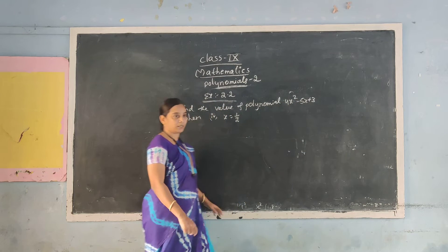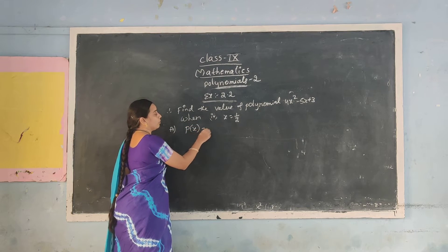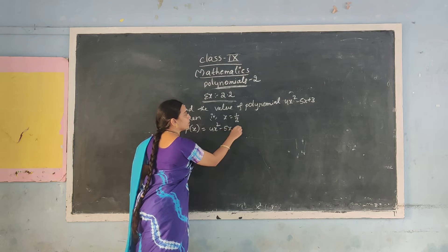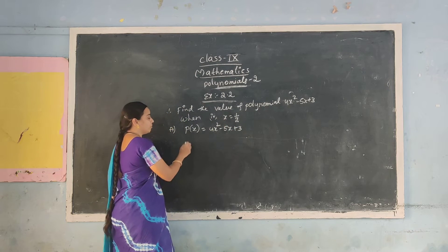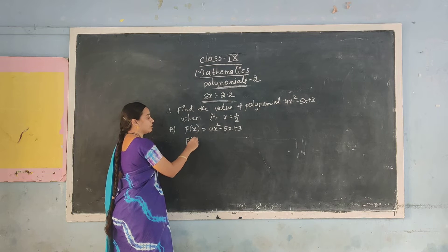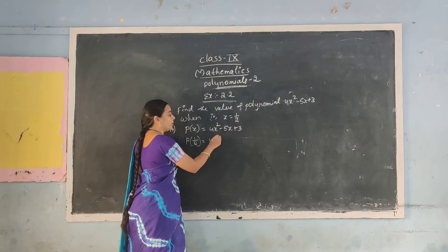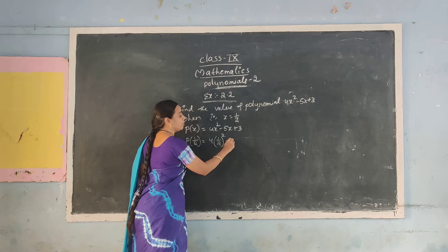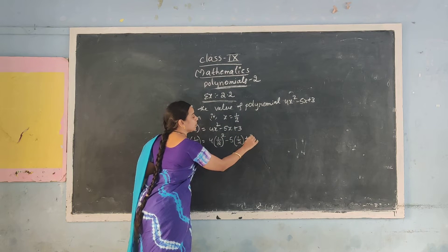First of all, p of x is denoted by the polynomial, that is 4x squared minus 5x plus 3. Here x value is 1 by 2. So in the place of x we will substitute 1 by 2: 4 into (1 by 2) squared, minus 5 into (1 by 2), plus 3.